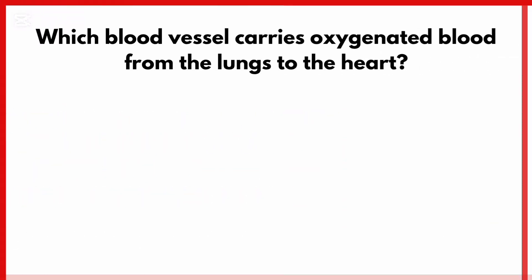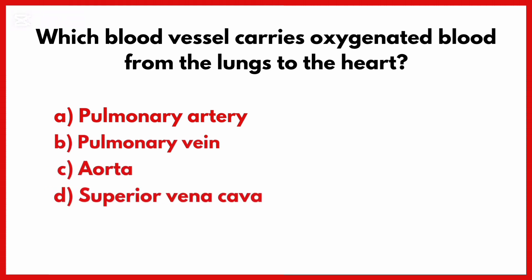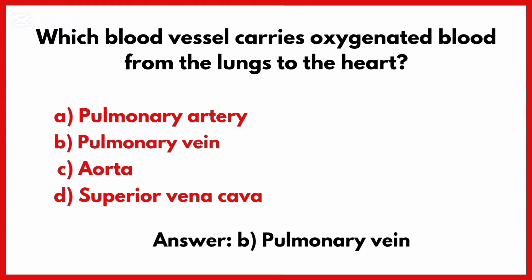Which blood vessel carries oxygenated blood from the lungs to the heart? Correct answer is option B: Pulmonary vein.